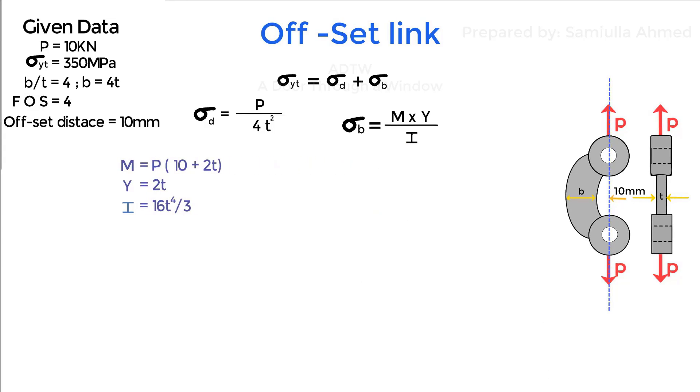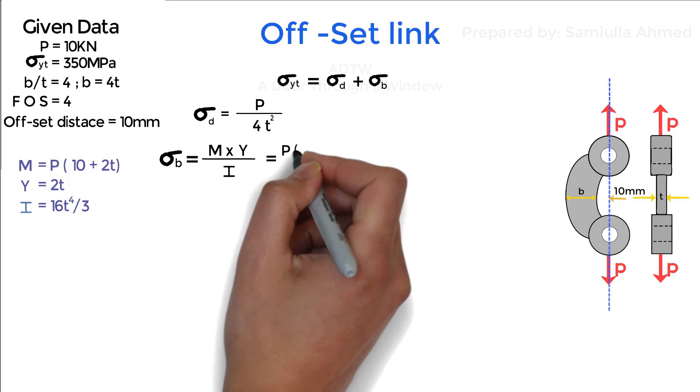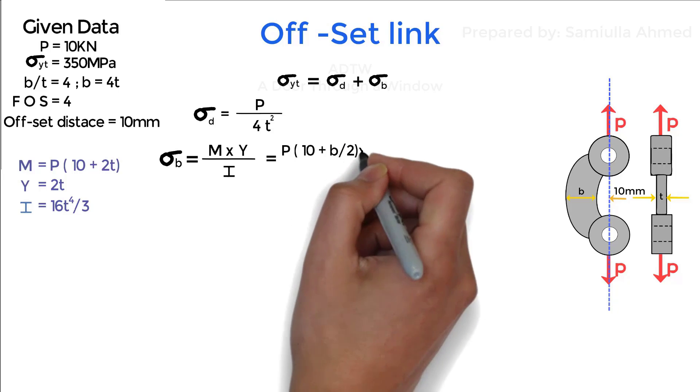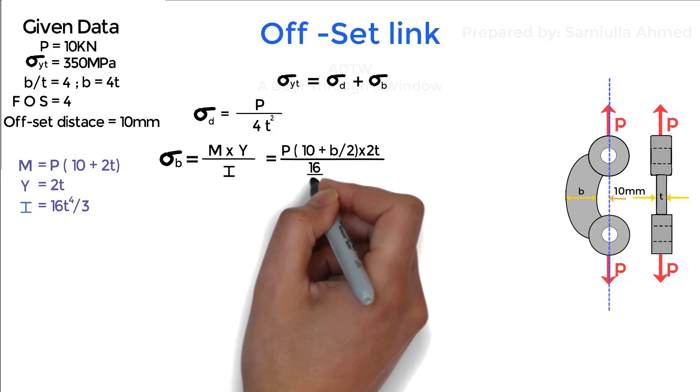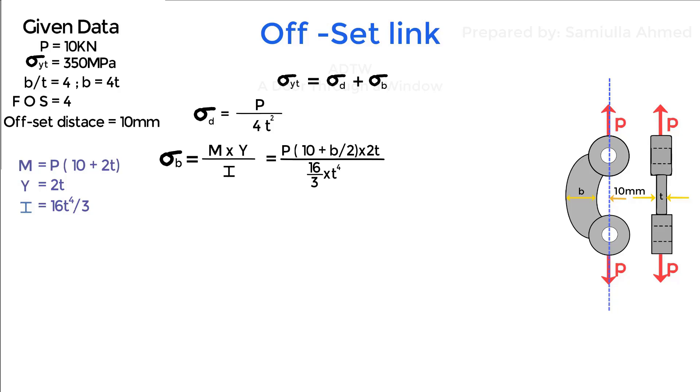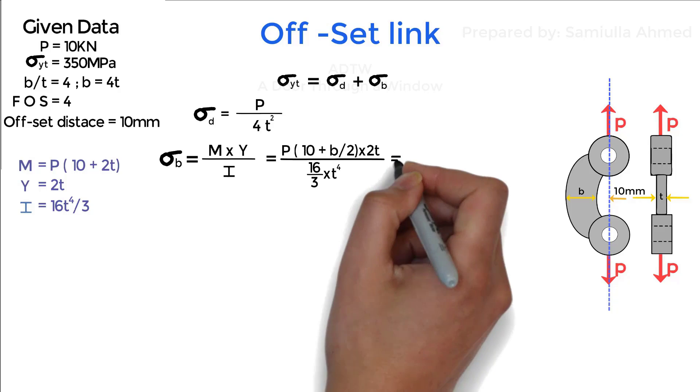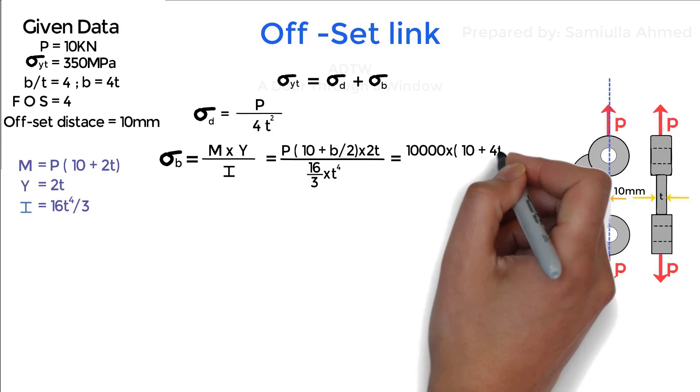Substituting all the values in bending stress we have the following equation: P into 10 mm plus width by 2 into 2t divided by 16 by 3 into t raised to 4. If we put the value of P which is given as 10 kN and b as 4t, we have the following equation.